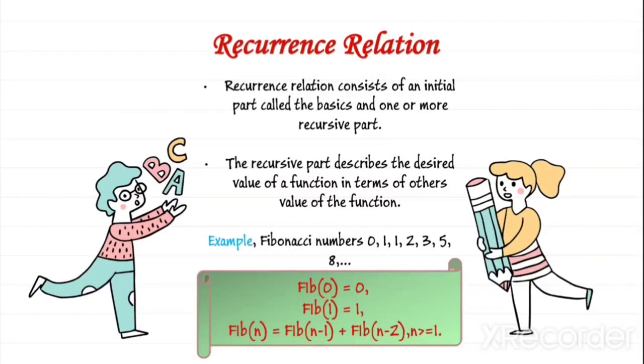Recurrence relation consists of an initial part called the basis and one or more recursive parts. The recursive part describes the desired value of a function in terms of other values of the function. For example, Fibonacci numbers: 0, 1, 1, 2, 3, 5, 8, and goes on. Fib of 0 equals 0, Fib of 1 is 1. To know the Fib of n, we use Fib(n-1) plus Fib(n-2), where n should be greater than or equal to 1.